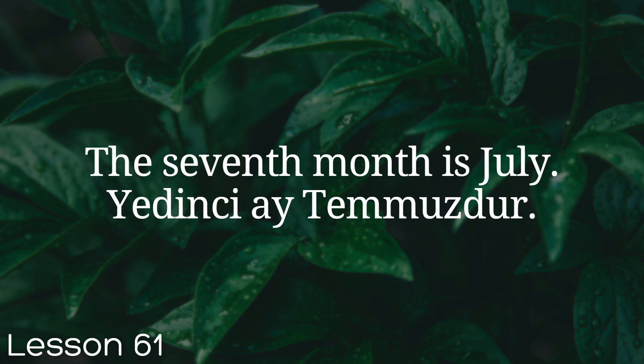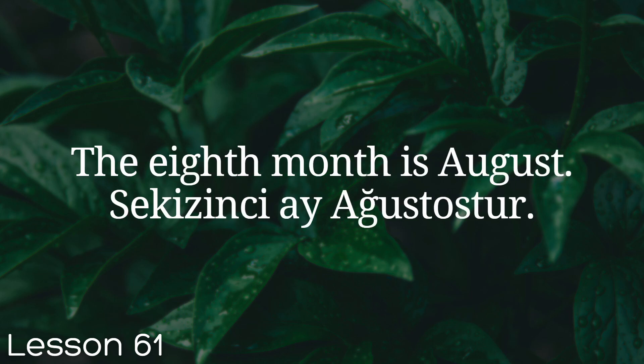The seventh month is July. Yedinci ay Temmuz'dur. The eighth month is August. Sekizinci ay Ağustos'tur.